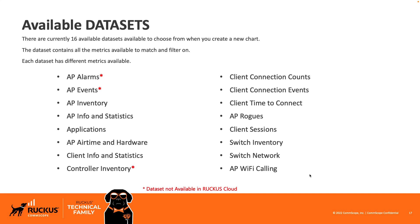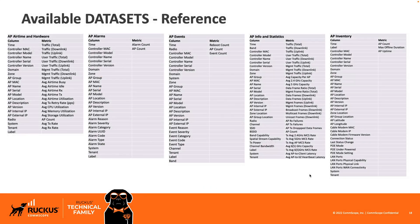As of this recording, there are 16 available datasets to choose from. The dataset contains the metrics to match and filter on. You'll see things like AP inventory, AP info and statistics, applications, AP rogues, and multiple others. Each one contains different variables. A few of these are marked with asterisks, which means they're not available in Ruckus Cloud. If Ruckus Cloud is feeding your analytics, those datasets are not available — for example, controller inventory doesn't make sense in cloud since you don't have a controller. So just know those are not available, though you could pull similar statistics from other datasets.